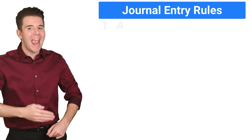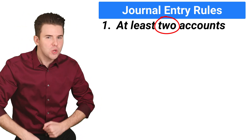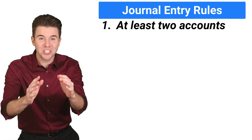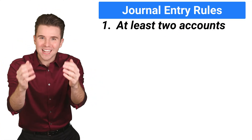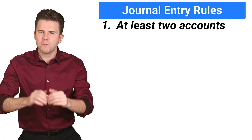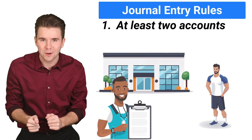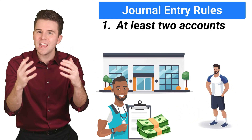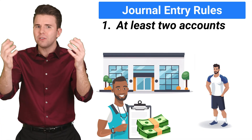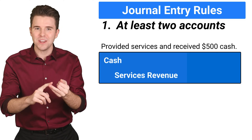Rule number one: every journal entry needs at least two accounts. You can't just write one account and call it a day. You need to show what accounts are affected by the transaction. For example, let's say you provide training services for a customer and they pay you $500 cash. What are the two accounts involved here? Cash and services revenue.